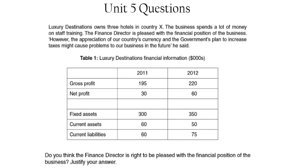Let's calculate the current ratio. In 2011 the current ratio is 1, which as I've said is not very liquid — technically it is because they have enough current assets to cover current liabilities, but we don't know how much of that is stock or whether the stock will be sold, especially given issues in the economy such as plans to increase taxes or currency appreciation. In 2012 it's even worse: the current ratio is 0.67, which tells us they're not liquid. The profit figures do look good — net profit went from 30 to 60, so it's doubled — which is why the finance director has been impressed.